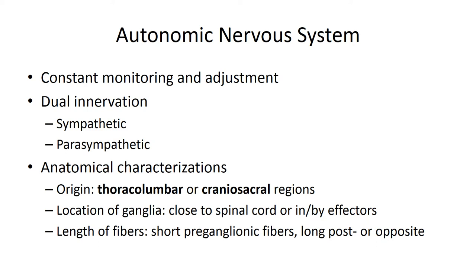The autonomic nervous system has two divisions: the sympathetic, also called fight or flight, and the parasympathetic, known as rest and digest or feed and breed. Actions via the autonomic nervous system occur by dual innervation — the two divisions counterbalance each other's activities in an attempt to maintain homeostasis. These divisions are separated by the origin of their fibers: sympathetic fibers originate in the thoracic and lumbar regions of the spinal cord, sometimes called thoracolumbar, while parasympathetic fibers originate in the cranial and sacral regions, called craniosacral.